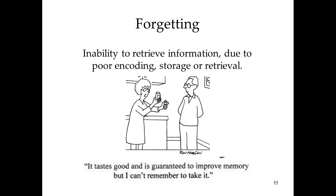That's how we pull information out — but often times it doesn't work as well as we'd like, and this is known as forgetting. Forgetting can occur at any of the three primary stages of memory formation: it can occur if we don't encode the information properly or even at all, if we have problems with storage or memory decay, or if we simply have trouble retrieving the information.